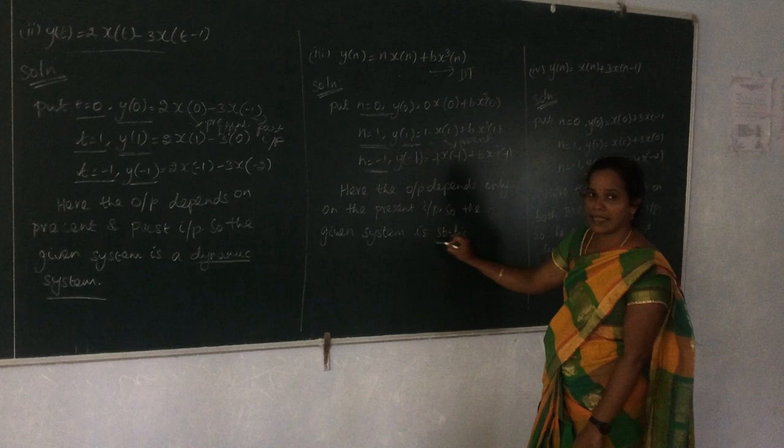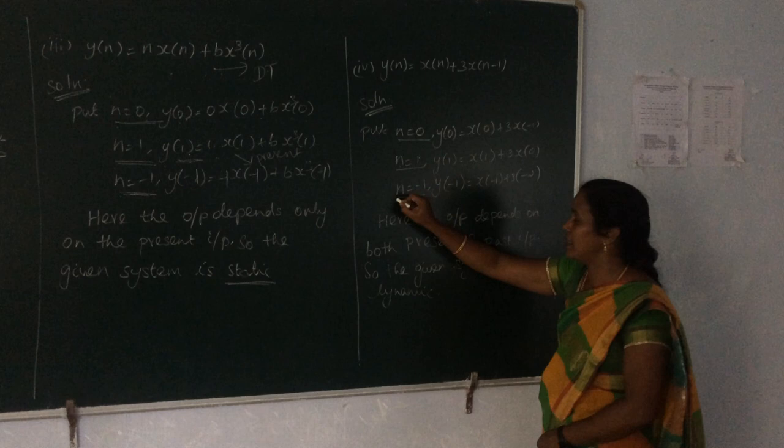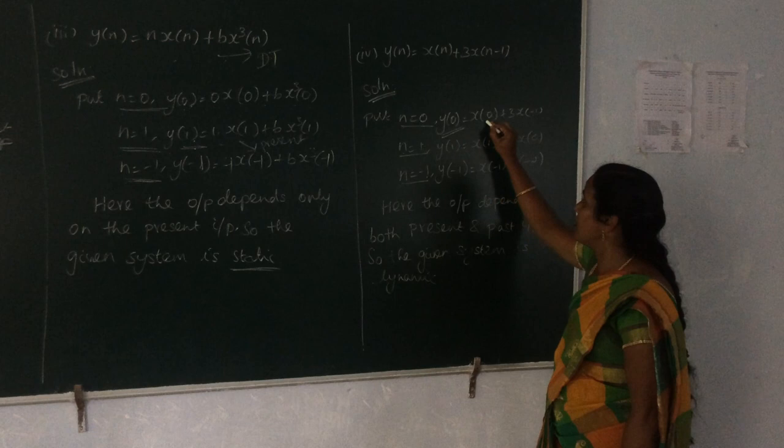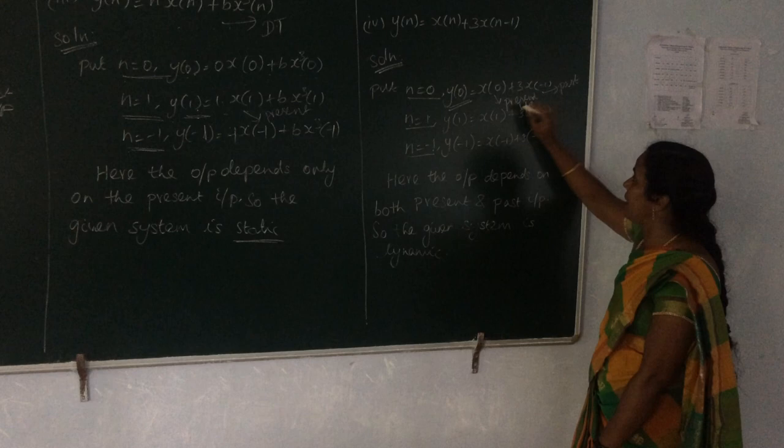The last problem is y[n] = x[n] + b·x[n-1]. We substitute n = 0, n = 1, and n = -1. For y(0) we get x(0) — the present input — plus b·x(-1), which is the past input. For every output it depends on the present input as well as the past input, so the given system is a dynamic one.